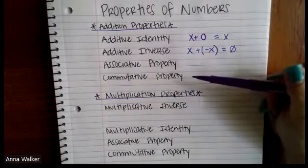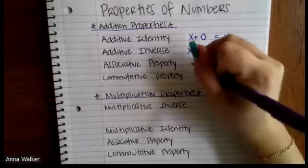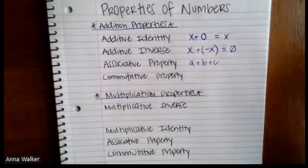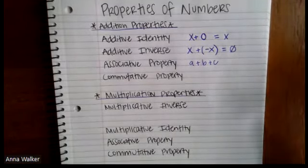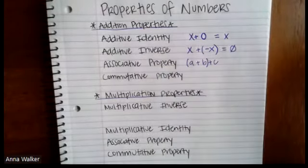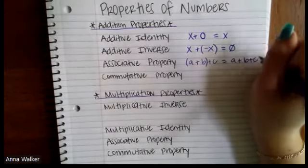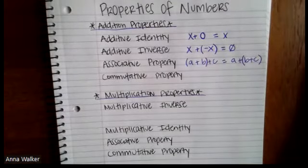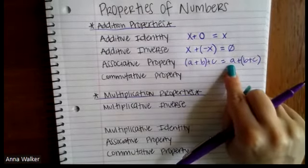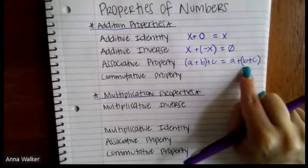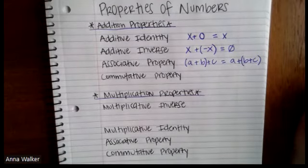The next two properties are about the order in which we add numbers. The associative property says if we're adding multiple things — let's say we have A, B, and C — we can add them in any order. So we could add A and B first, putting parentheses around them, or we could add B plus C first and then add A, with parentheses around B plus C to denote adding those two first. The associative property says we can add numbers up in really any order and we're going to get the same result.